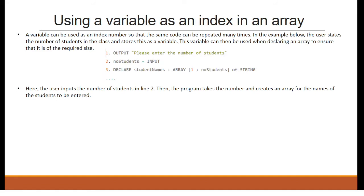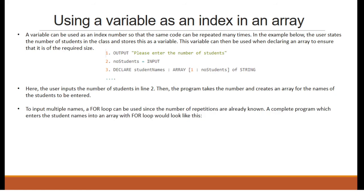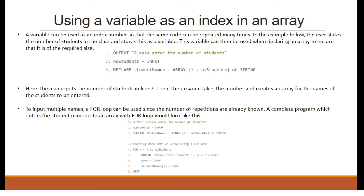Using a variable as an index in an array. A variable can be used as an index number so that the same code can be repeated many times. In the example below, the user states the number of students in the class and stores this as a variable. This variable can then be used when declaring an array to ensure it is of the required size. The user inputs the number of students in line 2, then the program creates an array for the student names. To input multiple names, a for loop can be used since the number of repetitions are already known. A complete program which enters students' names into an array with a for loop would look something like this.